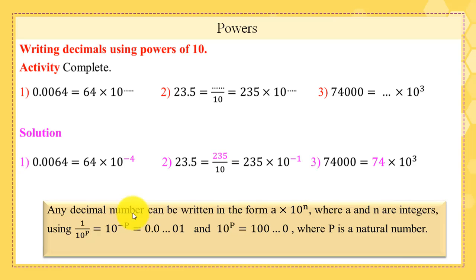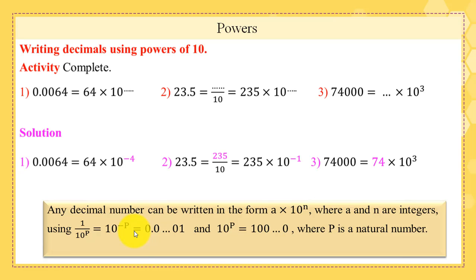We conclude that any decimal number can be written in the form a times 10 to the power n, where a and n are integers. Using 1 over 10^p equals 10^(minus p), powers change sign when moving from denominator to numerator and vice versa. 10^(minus p) equals 0.0...1 with p zeros, and 10^p equals 1 followed by p zeros.